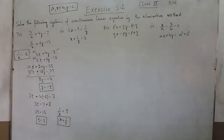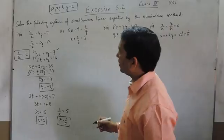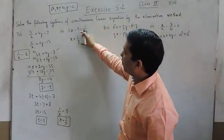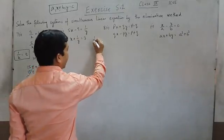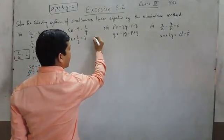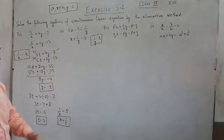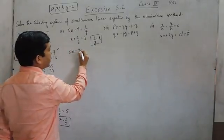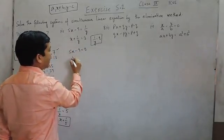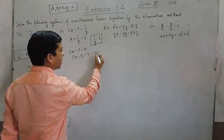So this is the better way of solving this equation. If I look at part 2 of question number 7, again here it is 1 upon y. So it is always very good that we take 1 upon y as any constant like t, and in the end we replace the value of t with 1 upon y. So the first equation will be 5x minus 9 is equal to t, which can be written as 5x minus t is equal to 9 as the first equation.